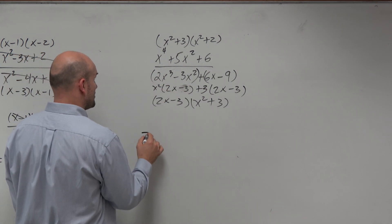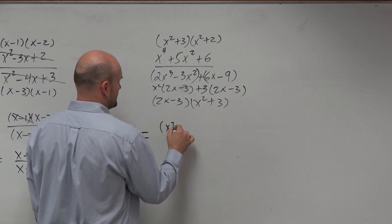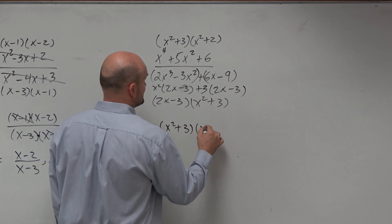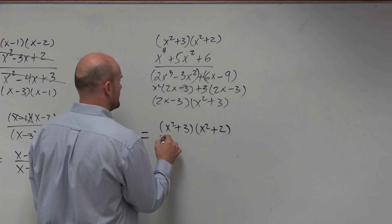So let's write this factored form here. So the factored form is x squared plus 3 times x squared plus 2. Oh, that would make sense.